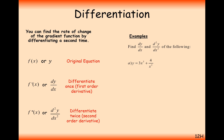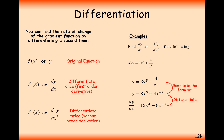For the function y equals 3x to the power of 5 plus 4 over x squared, we're going to find the first and second derivative. The first thing to do is rearrange 4 over x squared into 4x to the minus 2, then differentiate. Remember: bring the power down to the front, then reduce the power by 1.